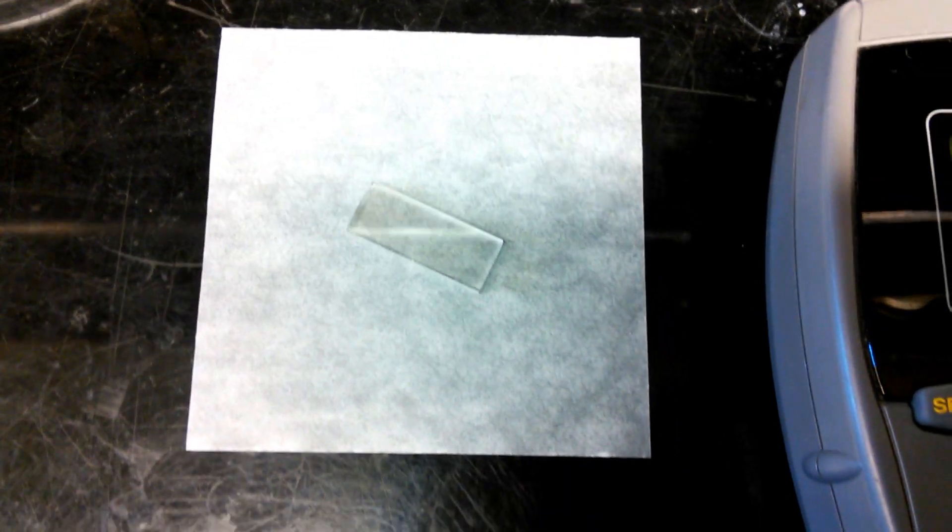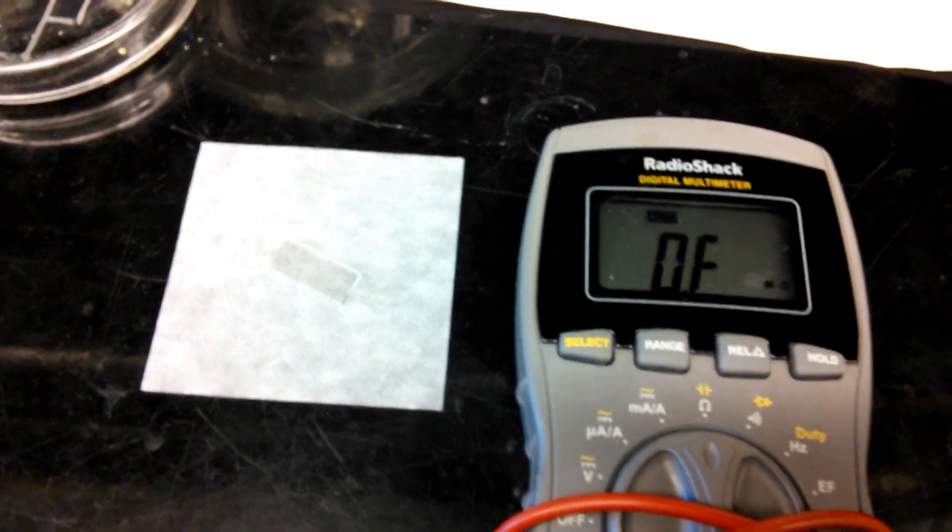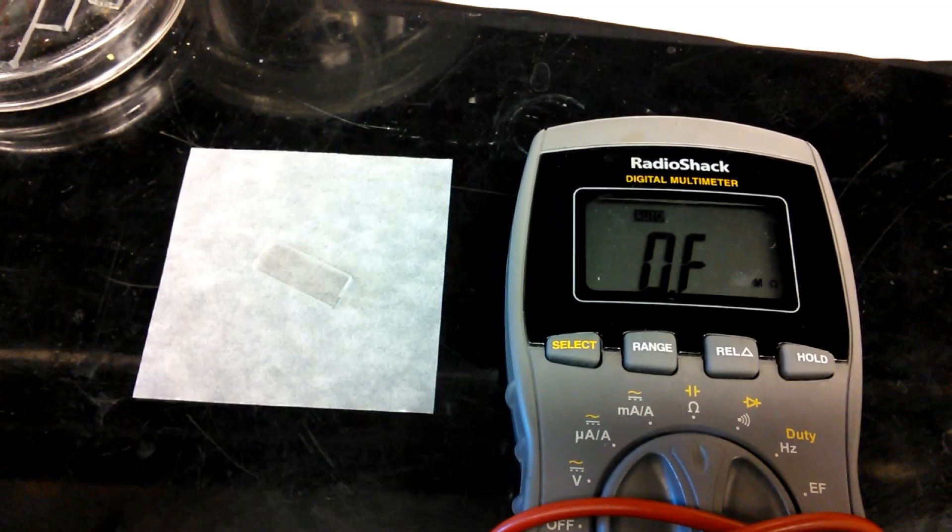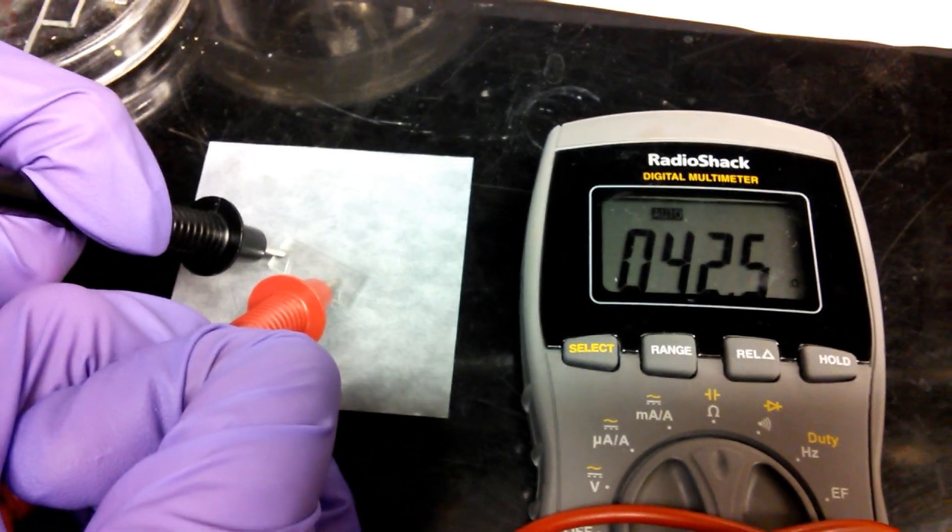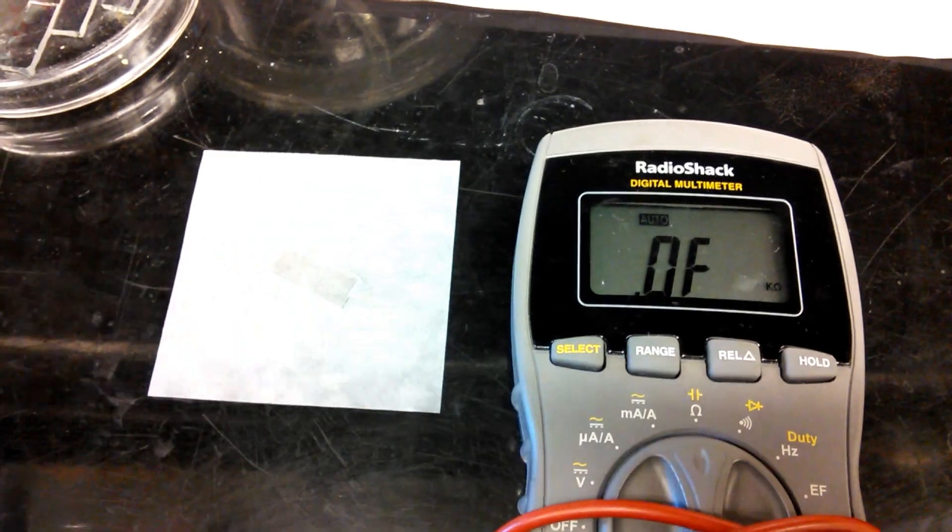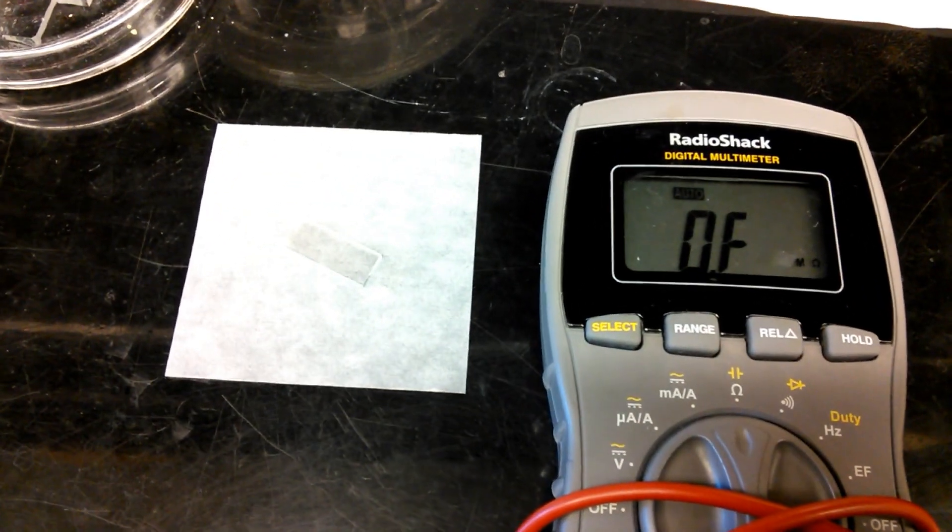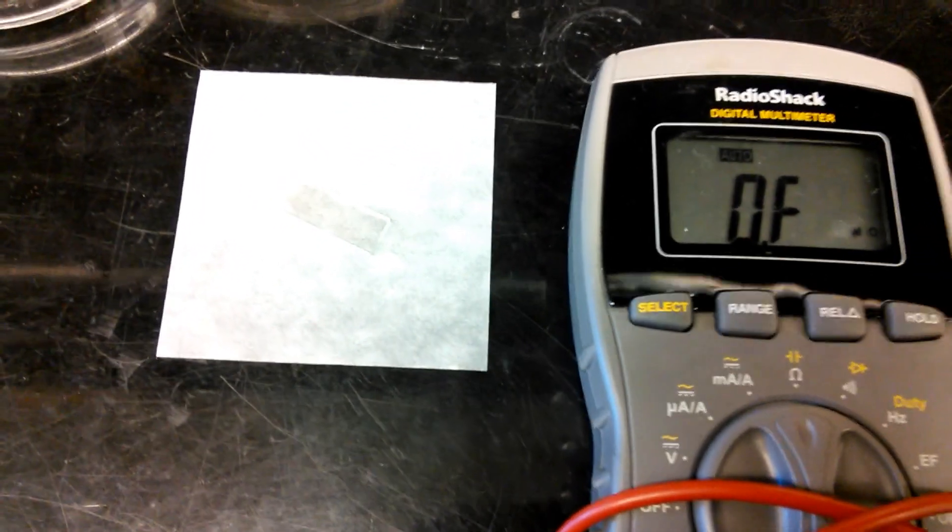Only one side of our substrate, the FTO side, is conductive, so we use a multimeter to determine the conductive side. We then make our films on the conductive side of the substrate.